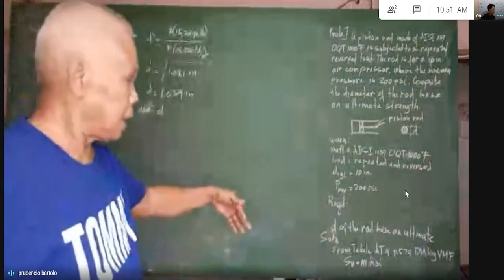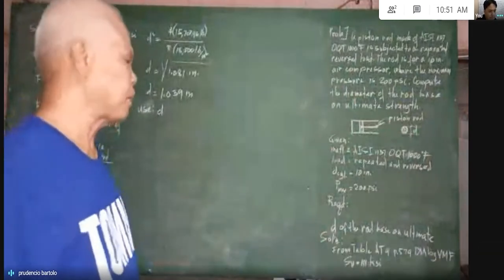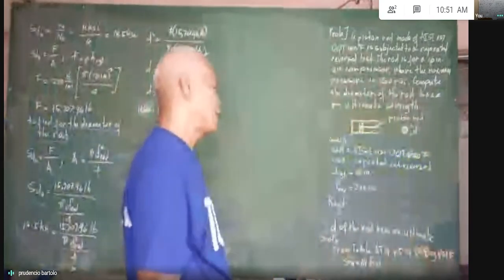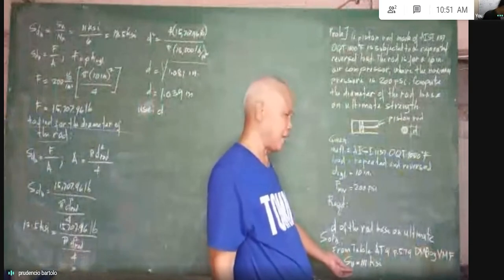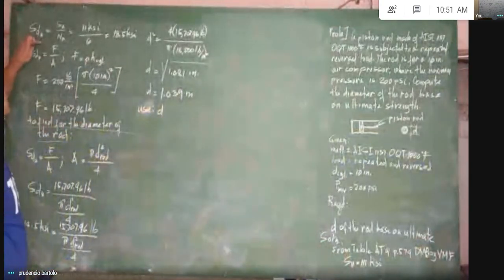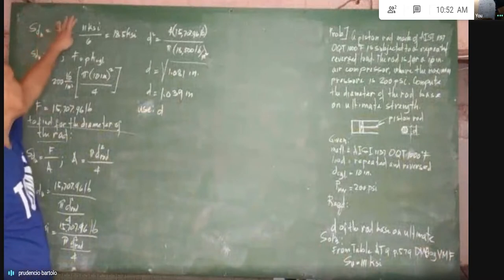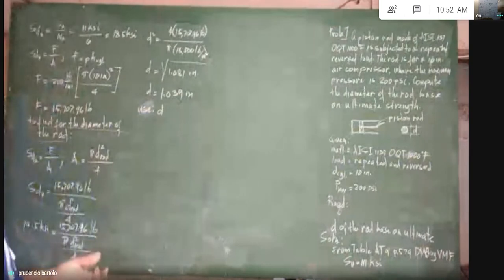The solution starts by taking the property of the material from Table 89, page 579, Design of Machine Elements by Virgil Moring Faires. The ultimate strength is given at 111 KSI. To find the diameter, we first consider the design stress based on ultimate, which equals the ultimate strength over the factor of safety based on ultimate: 111 KSI divided by 6, equal to 18.5 KSI.